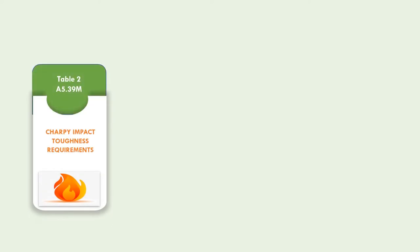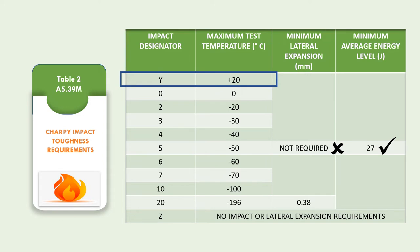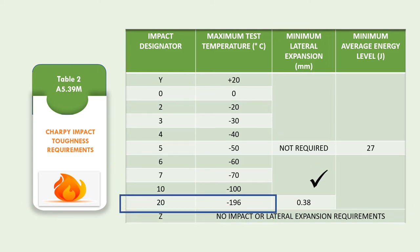Table 2 gives details about the Charpy impact toughness requirements. Up to 100 degrees Celsius, there is only a requirement of minimum average energy of 27 Joules and no requirement regarding minimum lateral expansion. Table 2 shows that a maximum test temperature of plus 20 degrees Celsius shall fulfill the requirement of minimum average energy of 27 Joules. Similarly, 2 indicates a test temperature of minus 20, 3 indicates minus 30, and so on. Impact Designator 20 indicates a test temperature of minus 196°C.